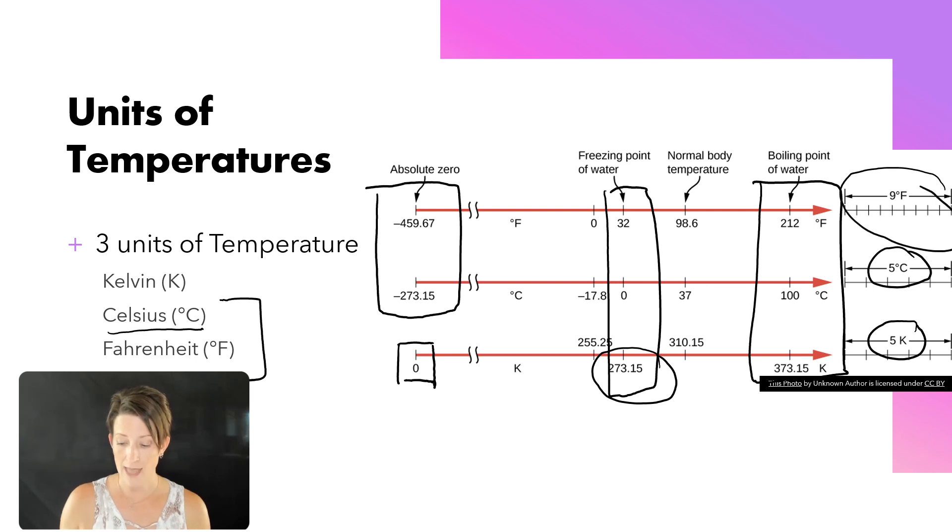Fahrenheit has a 9 to 5 ratio, which means it has a difference of 9 fifths, or 1.8. So as we increase Celsius by 1, Fahrenheit is being increased by 1.8. So it's not a clean transition like our two metric units are. But those are the three different temperatures that we can work with.